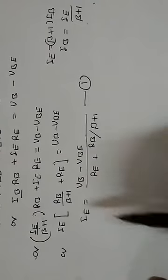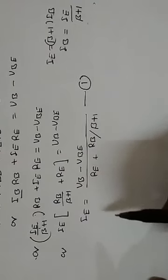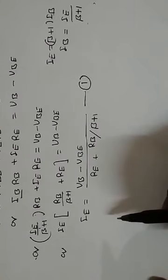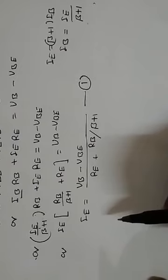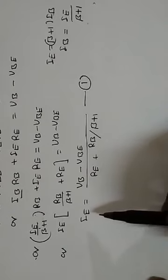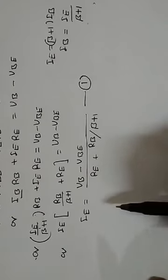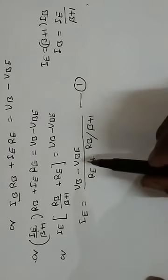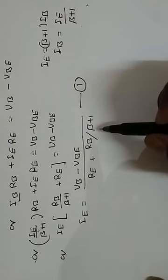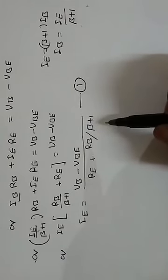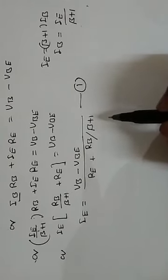अब हमारा purpose है कि emitter current nearly equals to collector current होता है, क्योंकि base current बहुत कम होता है. हमारा purpose है collector current को stabilize करना, जिससे कि operating point stabilize हो, collector-to-emitter voltage भी stabilize रहे. तो IE को VBE और β के प्रति insensitive बनाना होगा. To make IE insensitive to temperature and variation in β, we have to consider two things.